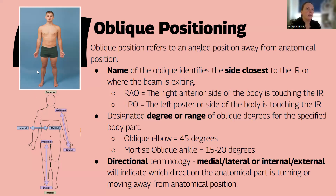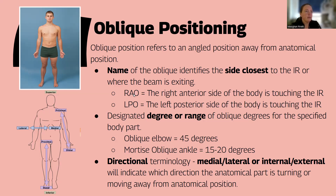An oblique will have a specific name — RAO, LAO, RPO, things like that. The name is the trick. It's identifying which part of the body is actually closest to the IR. So RAO means the right anterior side of the body is touching the IR, versus LPO where the left posterior side of the body is touching the IR. The middle letter, either A or P, tells you whether the anterior or posterior side is touching, and the first letter, R or L, tells you the side.